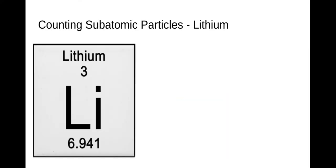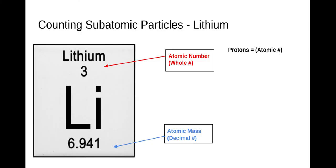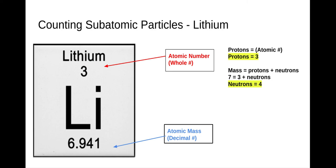Let's do another example — let's count the subatomic particles for lithium. Starting with our atomic number, the whole number, and recognizing our atomic mass of 6.9, we're going to round that to seven. The protons are equal to the atomic number, so lithium has three protons. The mass equals the protons plus the neutrons: seven equals three plus neutrons, which means lithium has four neutrons. And since this is neutral, the protons will equal the electrons, so lithium will have three electrons.